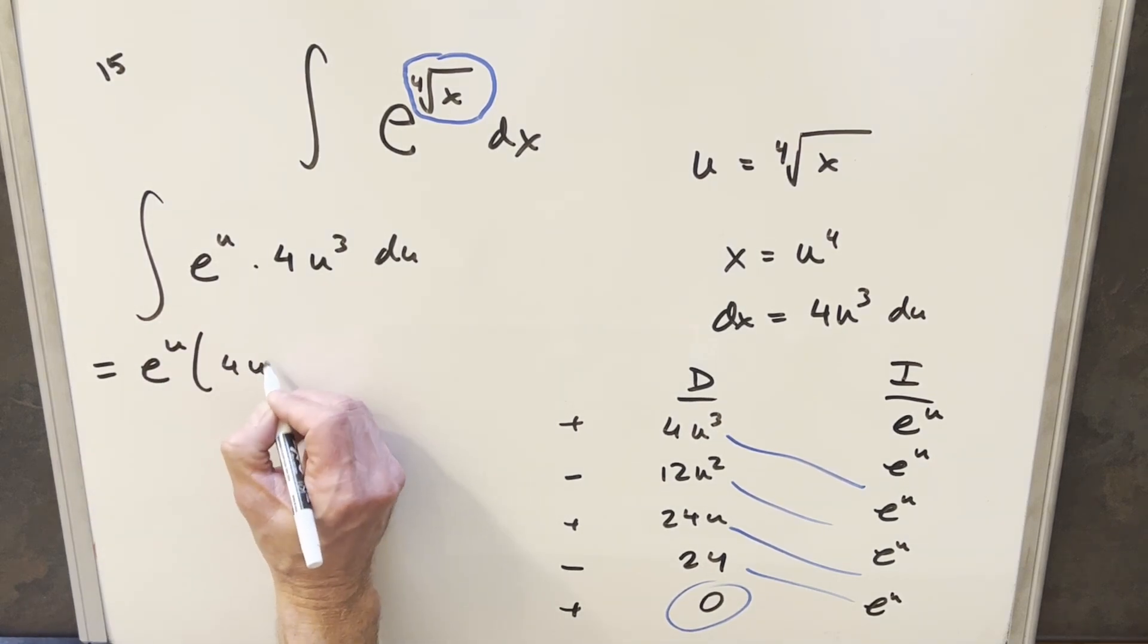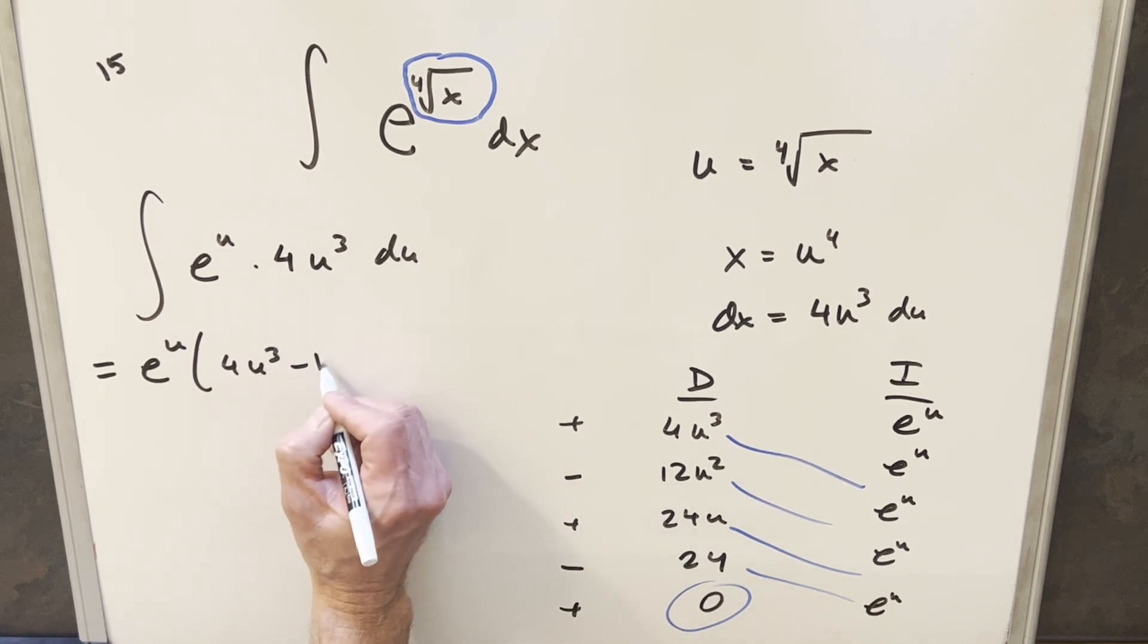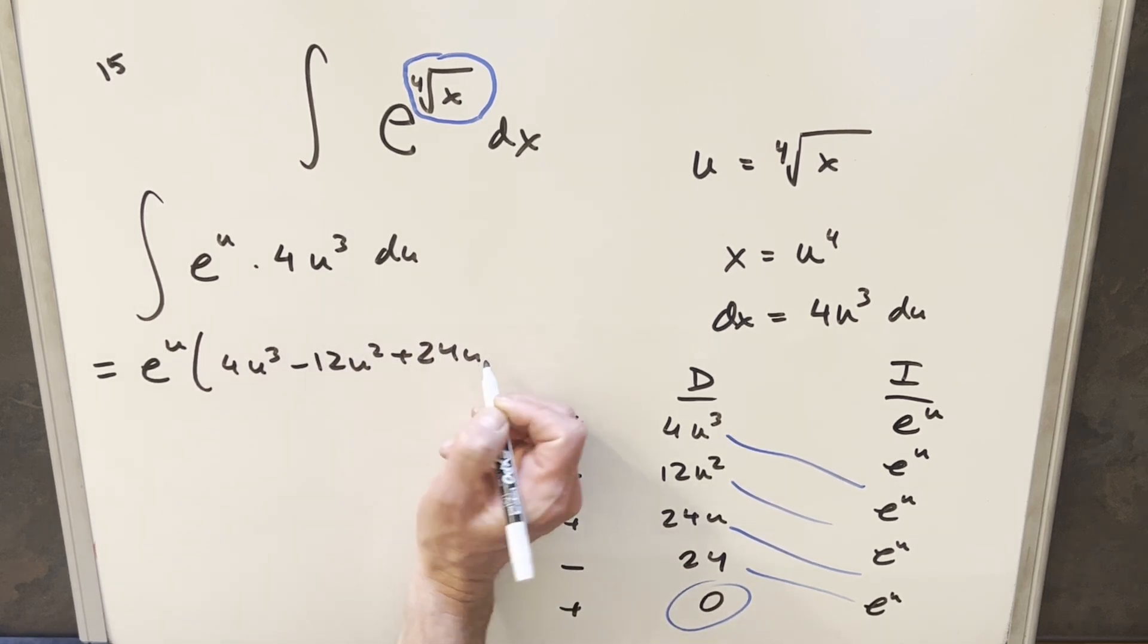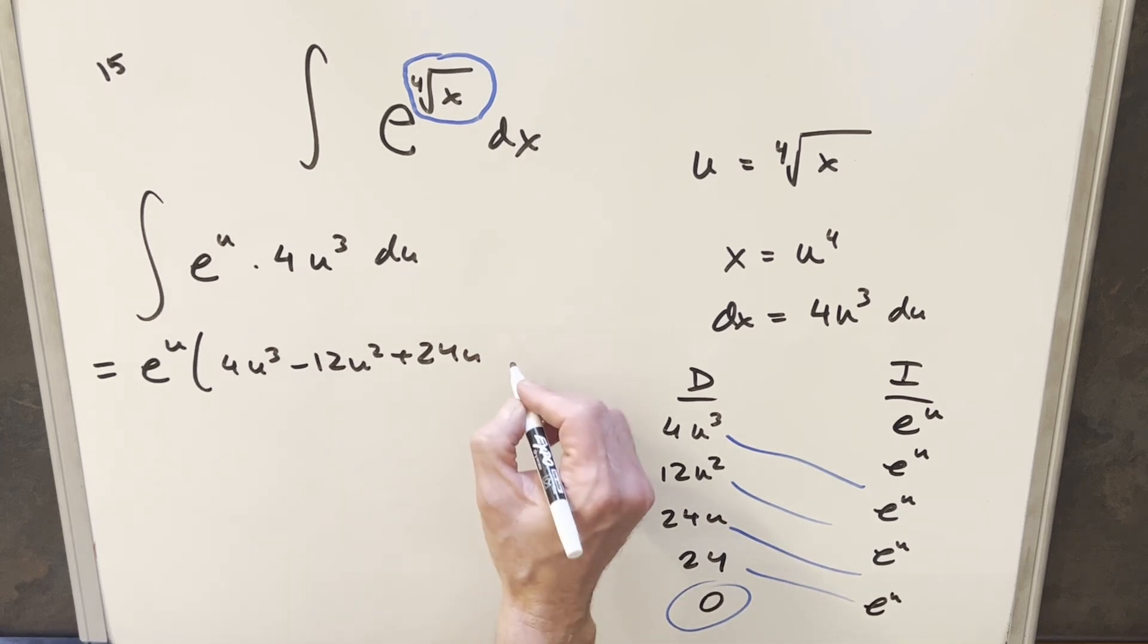And then we're going to have, let's see, 4u cubed minus 12u squared plus 24u. Here it's going to be a minus 24.